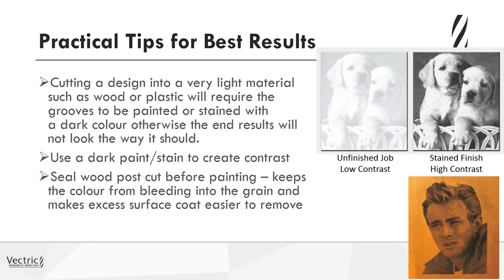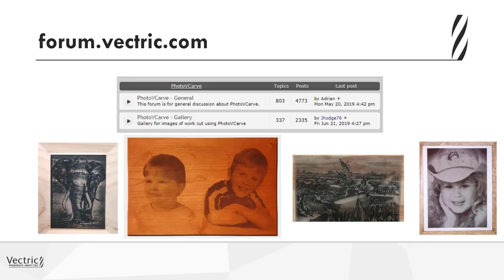Sealing the wood post-cut using a varnish or lacquer will help ensure your paint doesn't bleed into the grain, and makes it easy to remove the excess paint. Once your seal is dry, simply apply a dark stain or paint and wipe the excess off the surface — this will leave dark grooves that contrast with the material surface and really bring the design to life. Alternatively, you could carve the design, paint the complete job with a dark contrasting color, then sand off the top surface leaving the grooves dark. For more information, head over to the Vectric forum at forum.vectric.com.